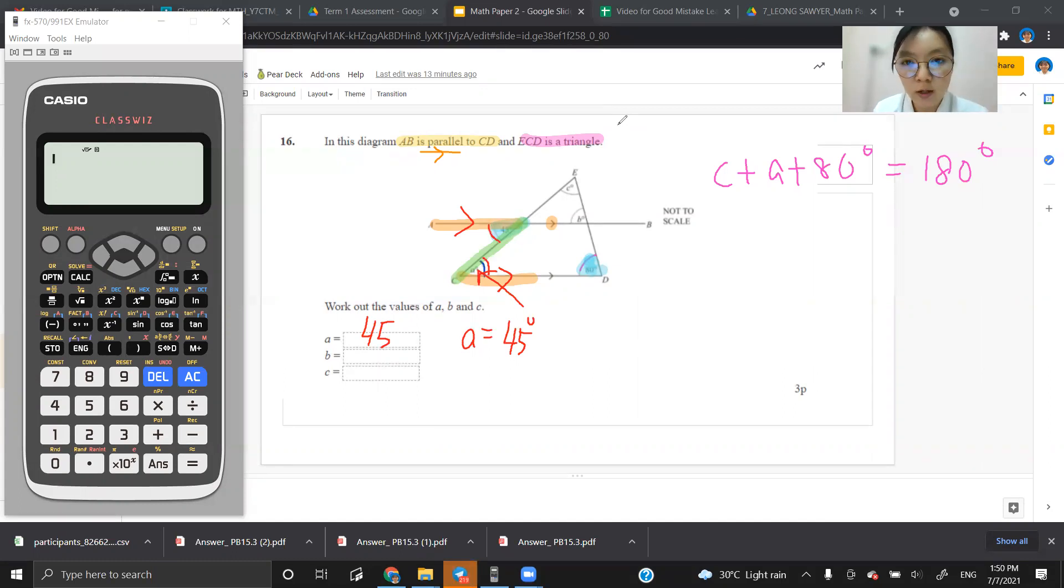B. Next, let's look for B. Where is angle B? Angle B is here. Again, we make good use of the parallel lines, and there is a transversal cutting through these two parallel lines.